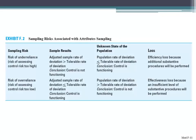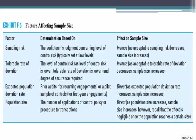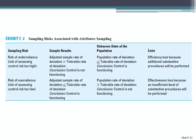This is right out of your text — sampling risk associated with attribute sampling. You have the risk of under-reliance and the risk of over-reliance. The risk of over-reliance will result in an incorrect acceptance, and the risk of under-reliance will result in an incorrect rejection of the population. With under-reliance, that's the risk of assessing control risk too high — your adjusted sample rate of deviation is going to be greater than your tolerable rate of deviation, and so you're going to conclude that that control is not functioning.